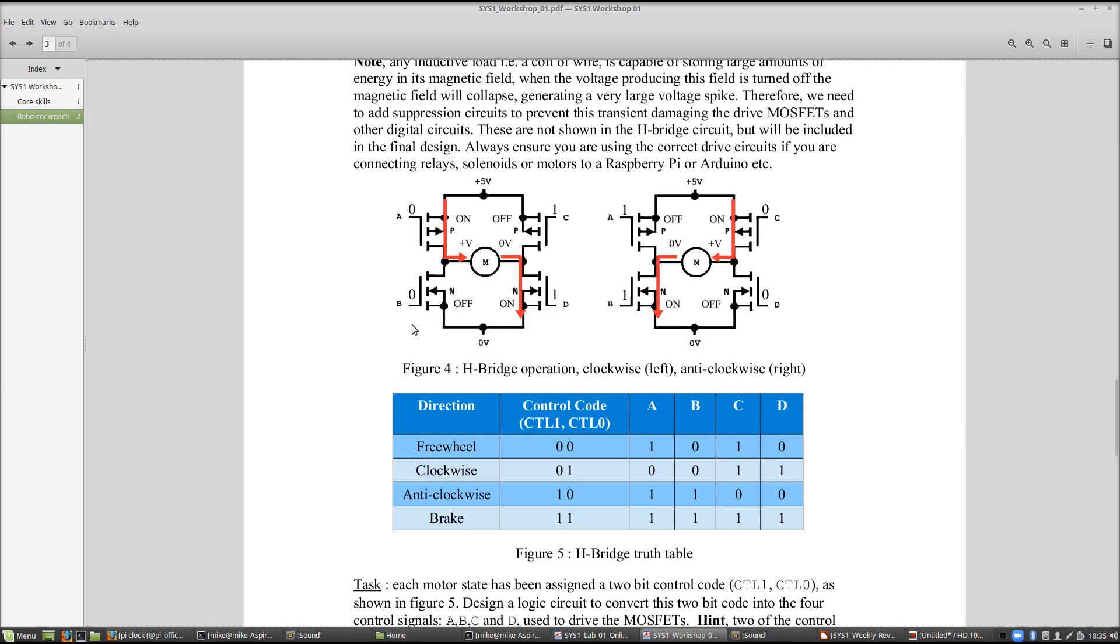By turning on the right pair of transistors, we can make the robot turn left or right. If we apply a positive voltage on one side of the motor and zero volts on the other side, it will rotate in one direction.